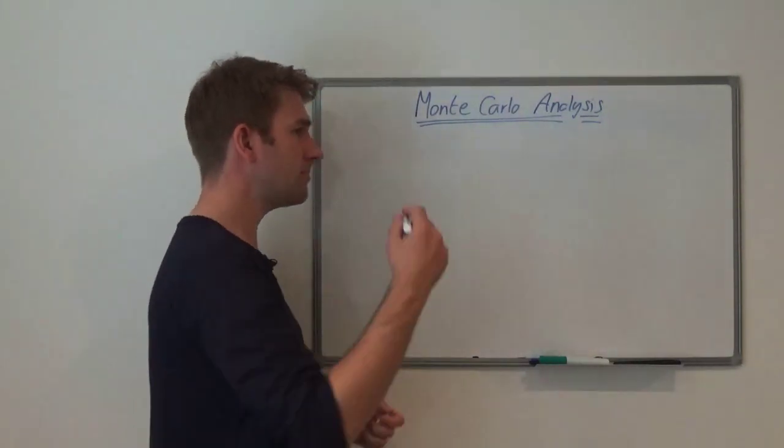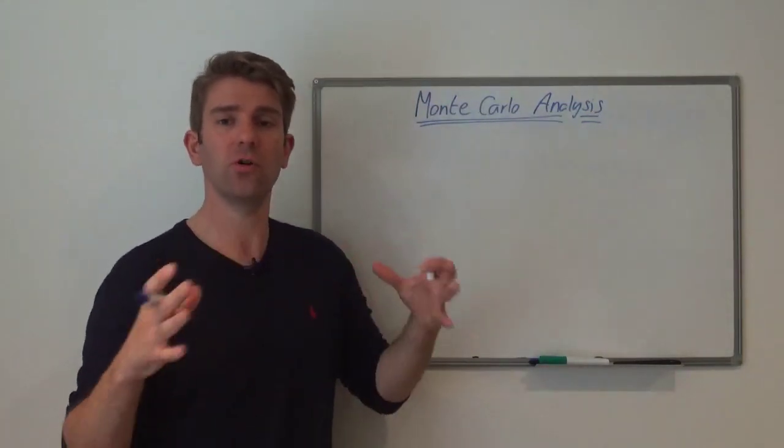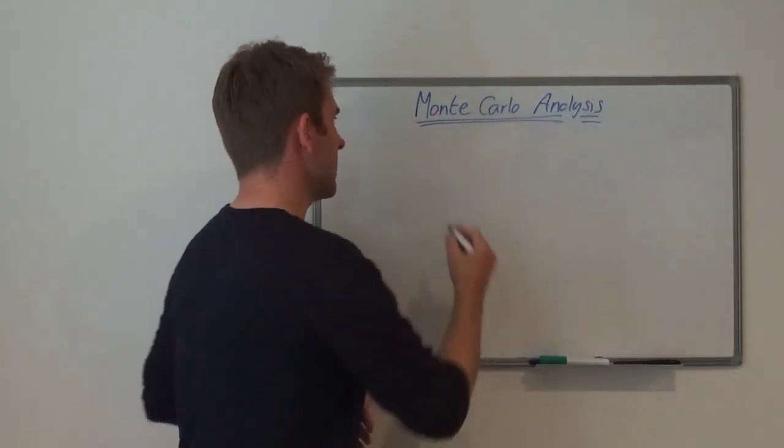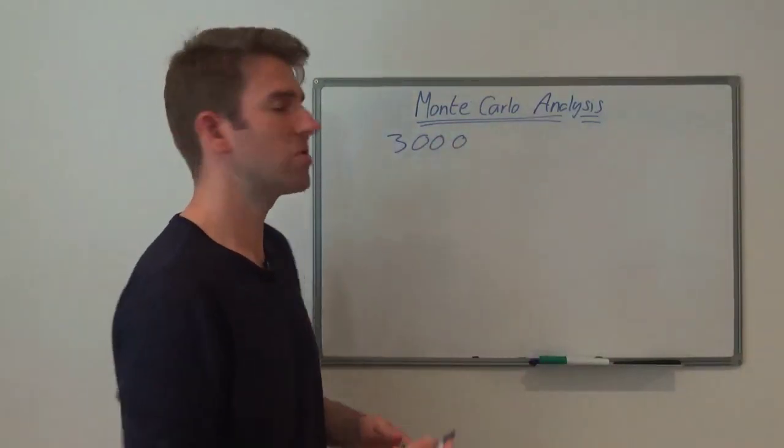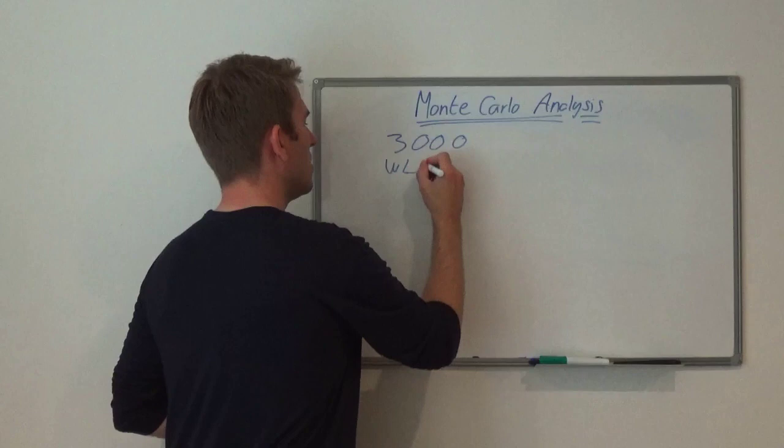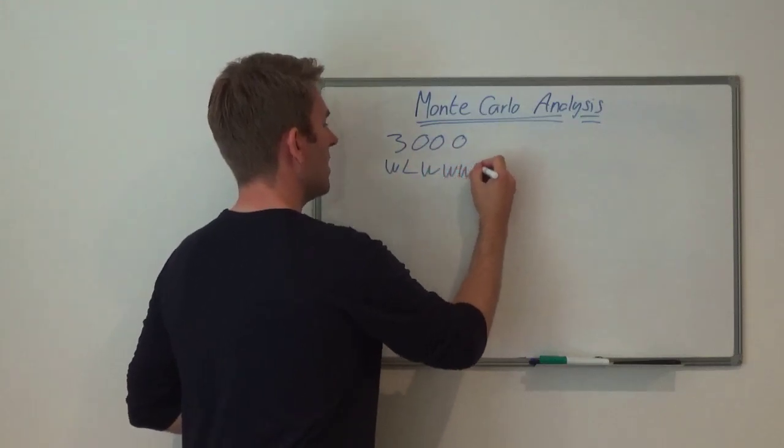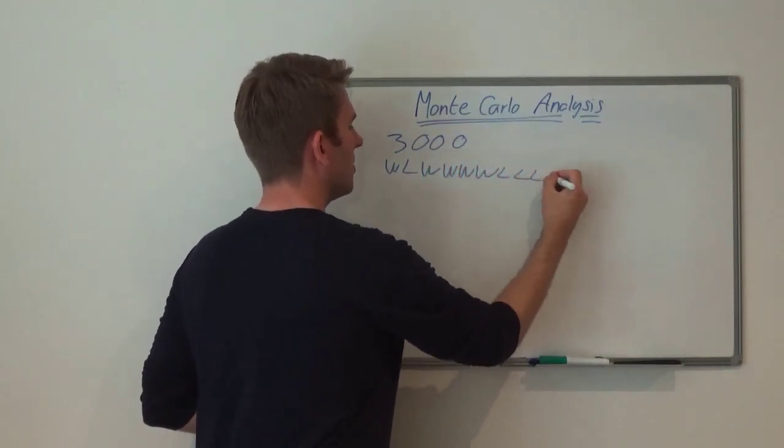It basically says, you know what, I'm going to take the record of my previous trades. Let's say I've done 3,000 trades, and let's say I've had a system where it's gone win, loss, win, win, win, win, loss, loss, loss, win, win, etc.